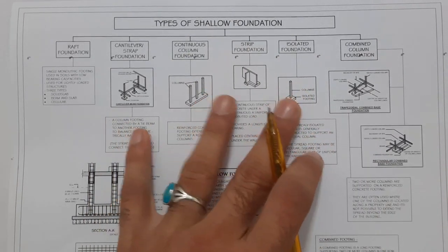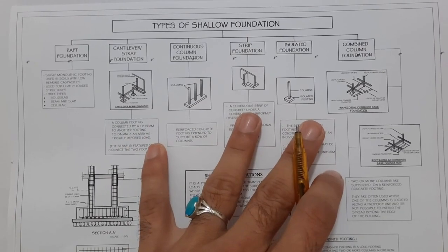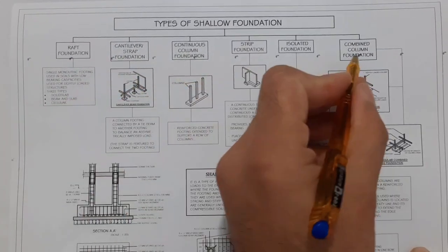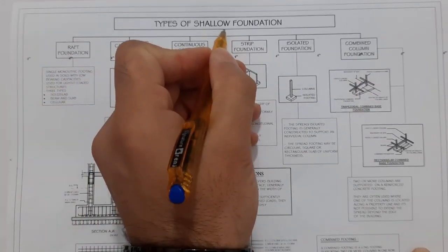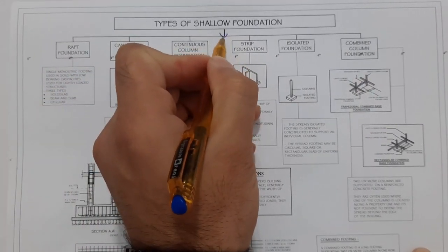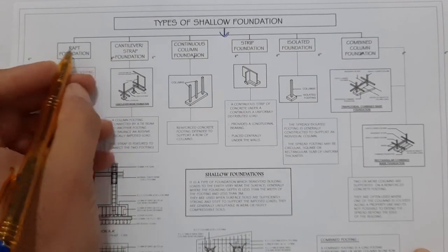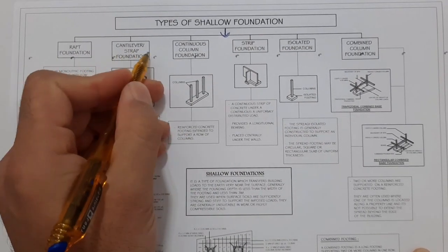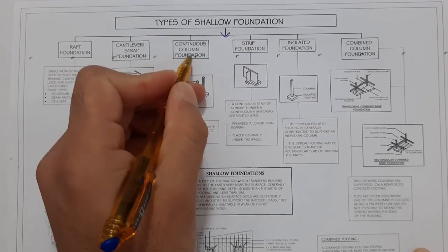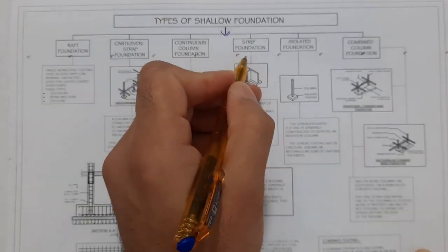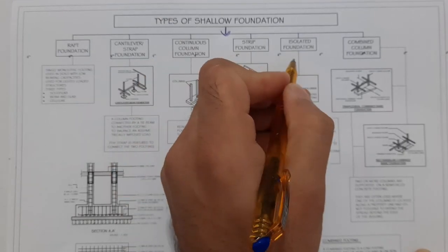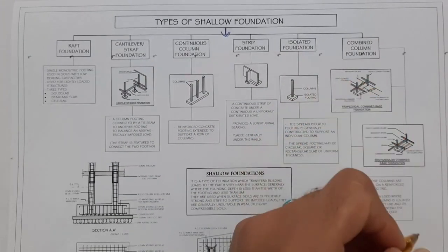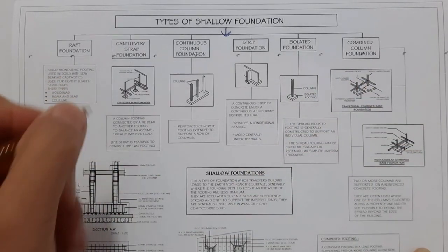In shallow foundation we have the following types, as you can see in the graph. The types include: raft foundation, cantilever strip foundation, continuous column foundation, strip foundation, isolated foundation, and combined footing.